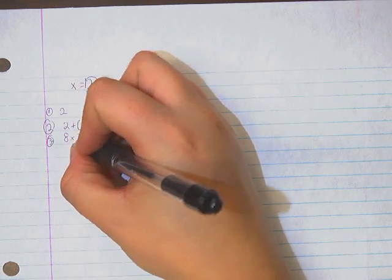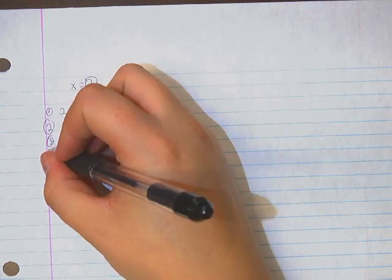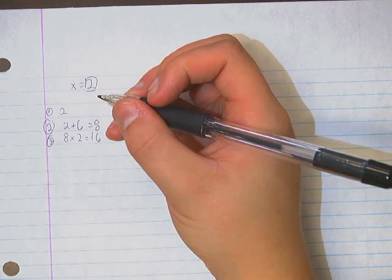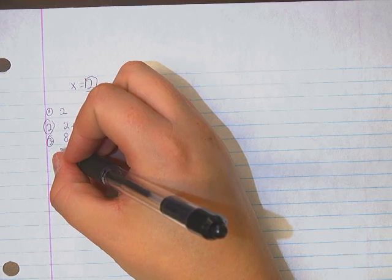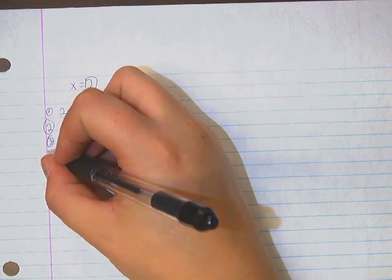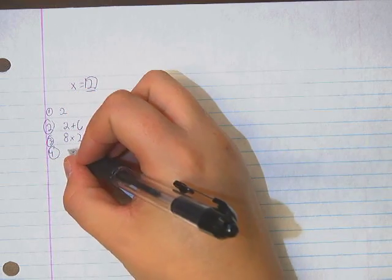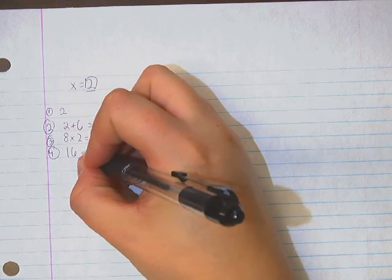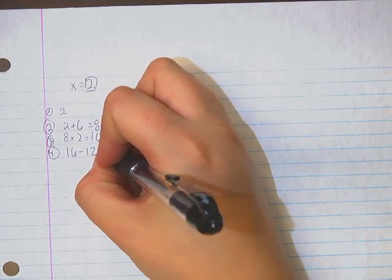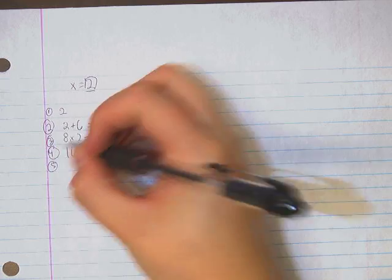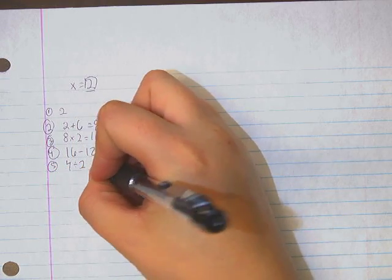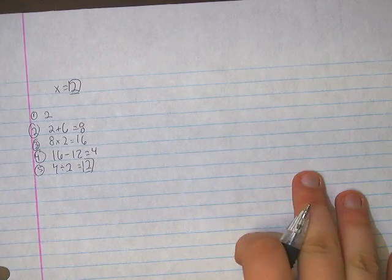We multiply that result times 2, which is 16. We subtract 12, minus 12, plus 4. Then we divide it by 2, and we end up with what we started with.